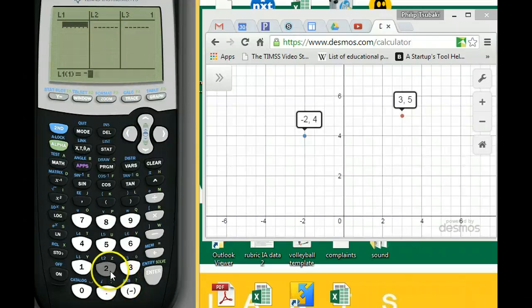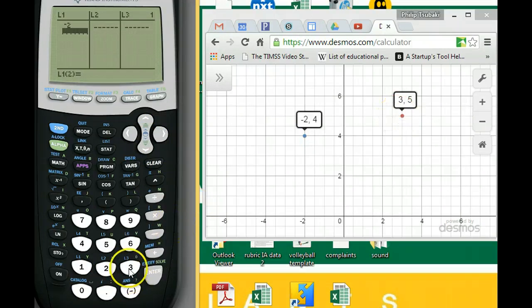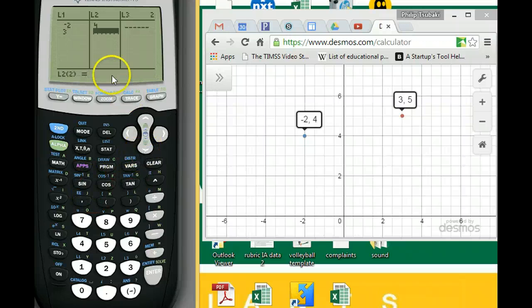So you get negative two, and then you put in three for the other point. And then the y coordinate for negative two is four, and the y coordinate for the other point is five.